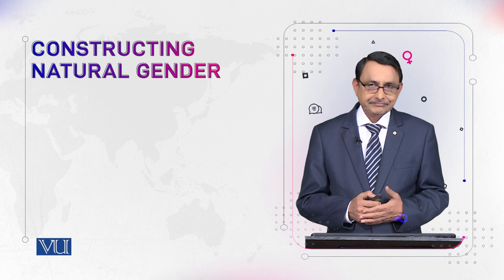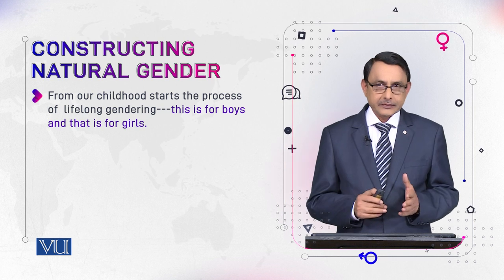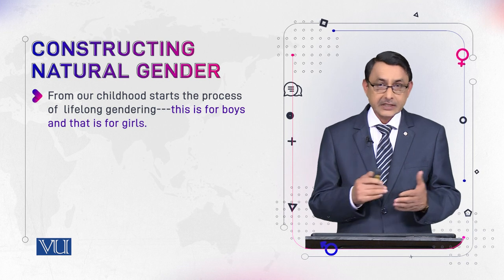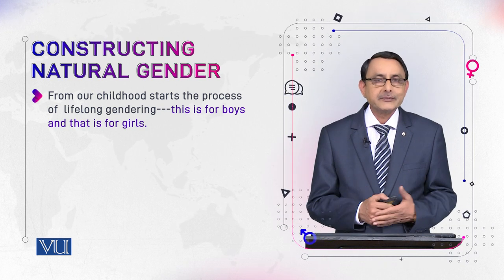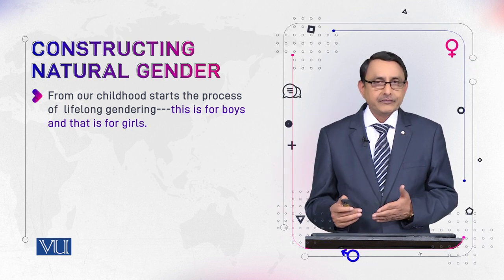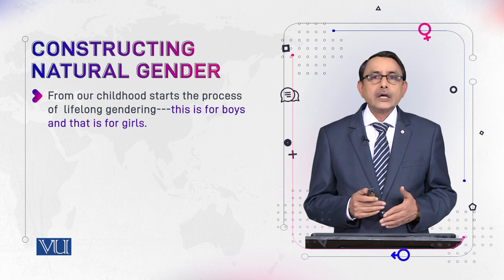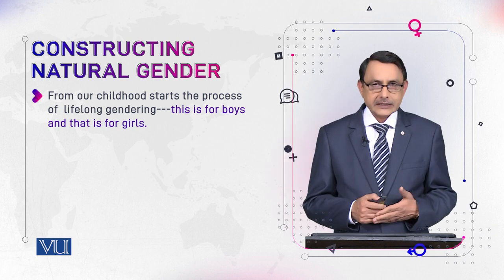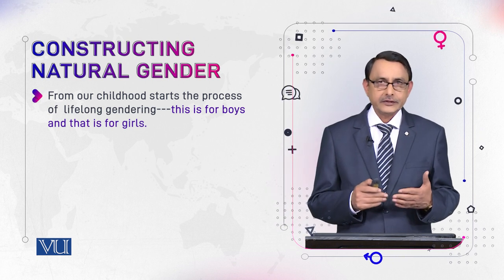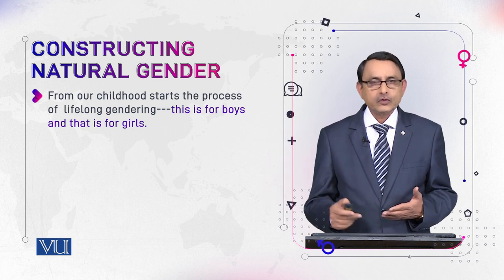So we conclude that from our childhood starts the process of lifelong gendering. This is the construction of natural gender, as said in the beginning — from naming ceremony to grooming as boy and girl, and then to naturalization of colors and color coding. This shows that the definition or construction of gender starts from our infancy and goes on throughout life.